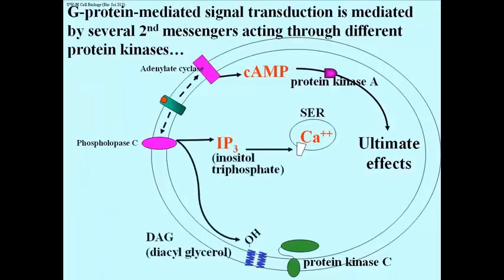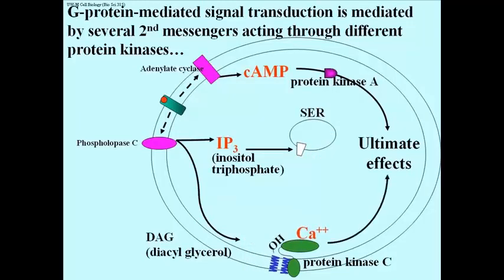Now let's look at what happens when the signal binds to the receptor and activates a membrane protein called phospholipase C. This generates two intracellular second messenger molecules: inositol phosphate 3, or IP3, shown here in the cytoplasm, and diacylglycerol, or DAG for short, which is actually embedded in the plasma membrane. The IP3 causes the release of stored calcium ions from the smooth endoplasmic reticulum in the target cell, which in turn binds to a membrane-bound protein kinase called protein kinase C, or PKC for short.